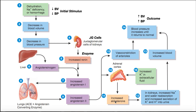The RAAS stands for renin-angiotensin-aldosterone system. What this system allows for is when the body has a decreased blood pressure, it allows a negative feedback loop to raise the blood pressure. If we have some initial stimulus, the outcome should be moving that parameter in the opposite direction. So let's start at the initial stimulus and work through this diagram — it's actually not very complicated.